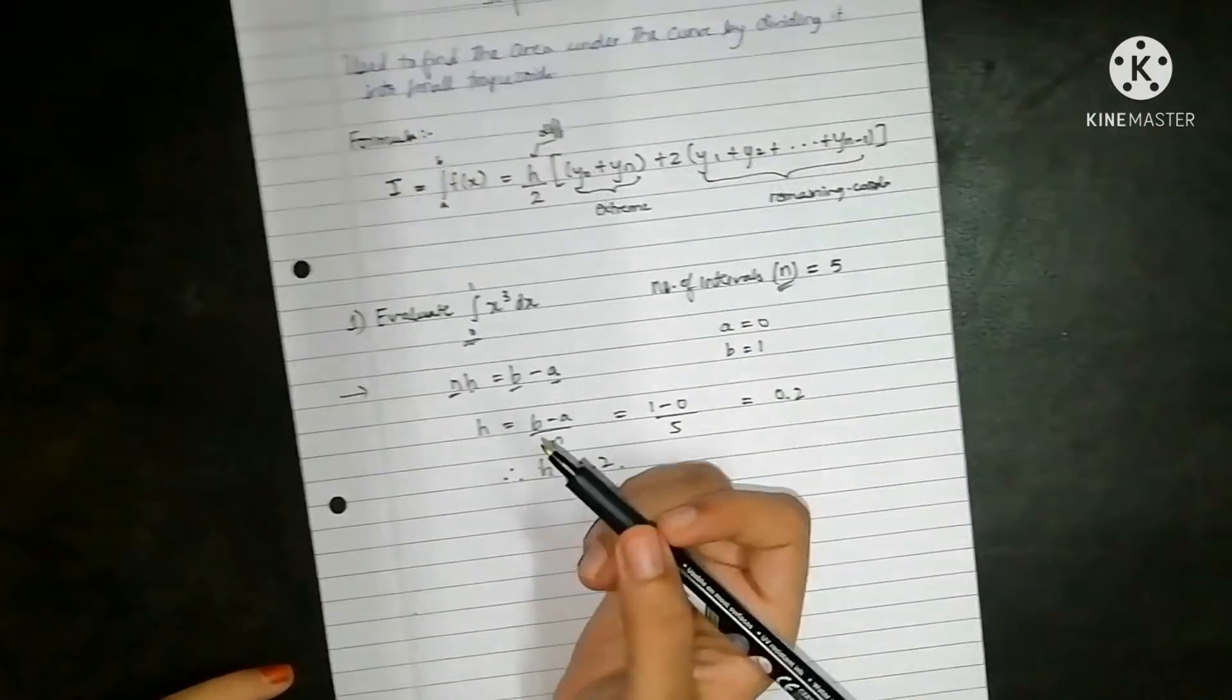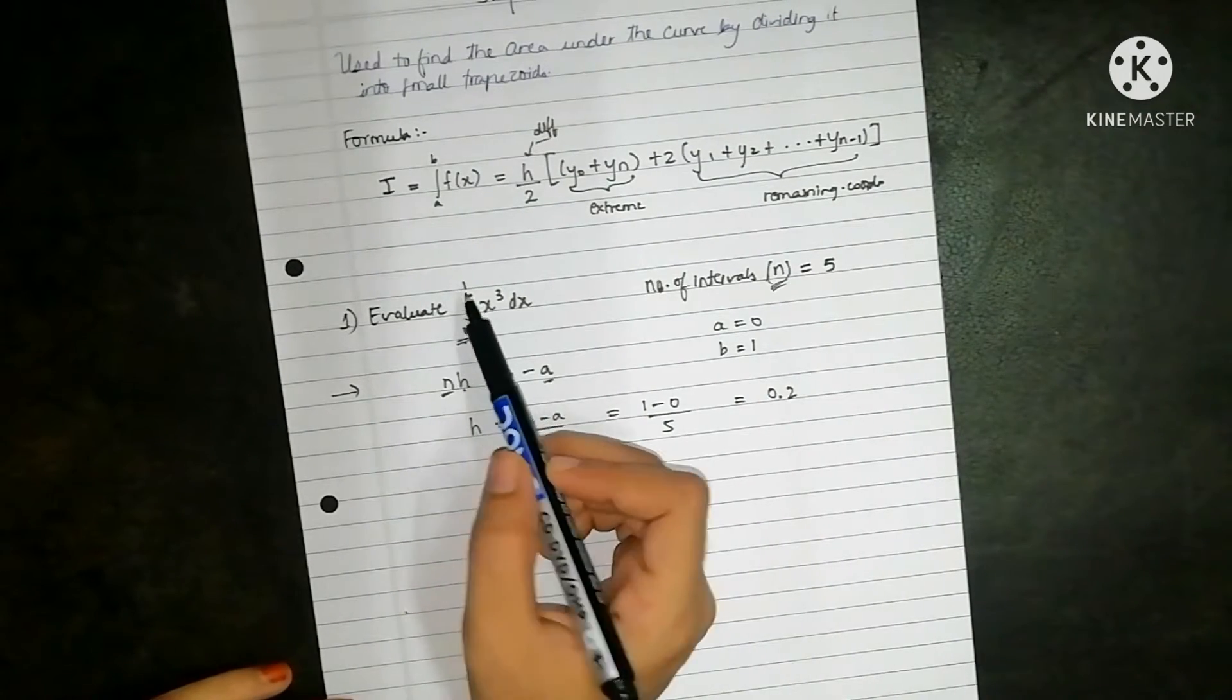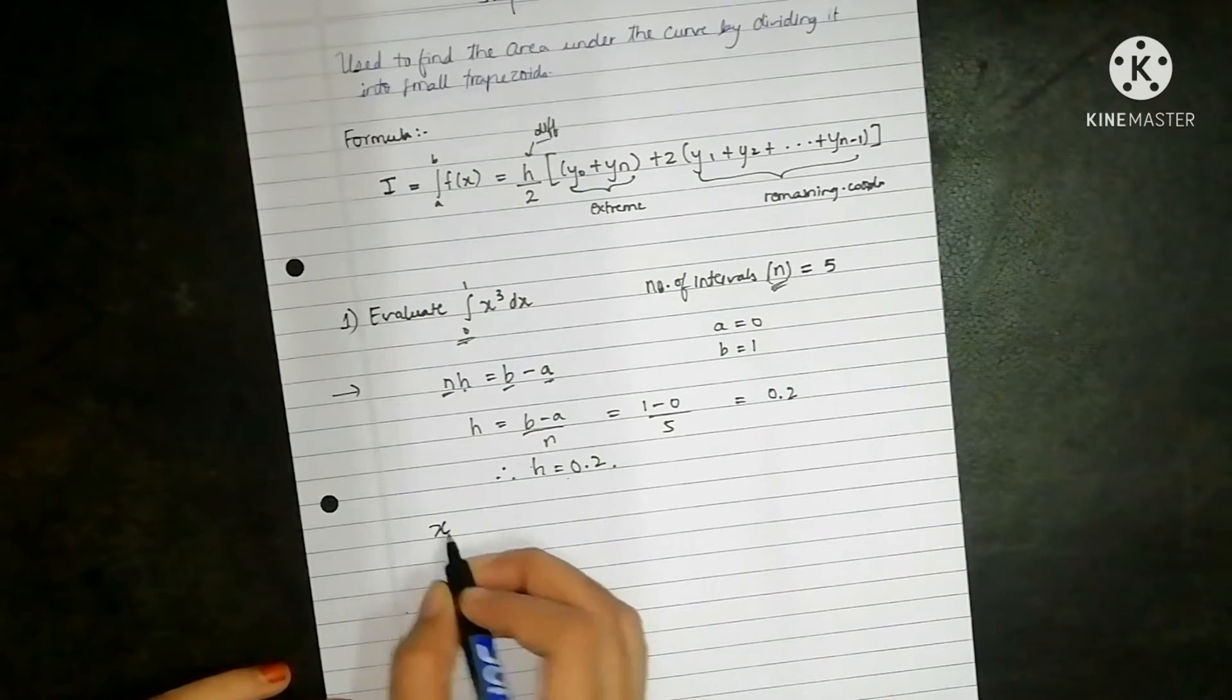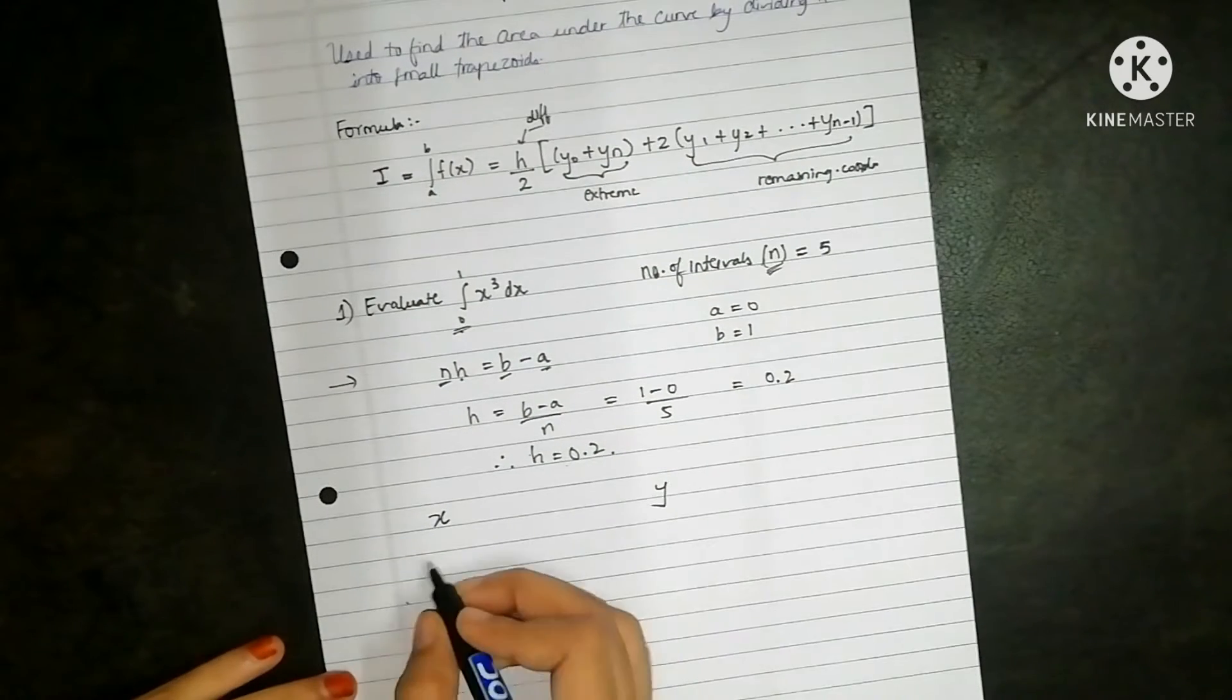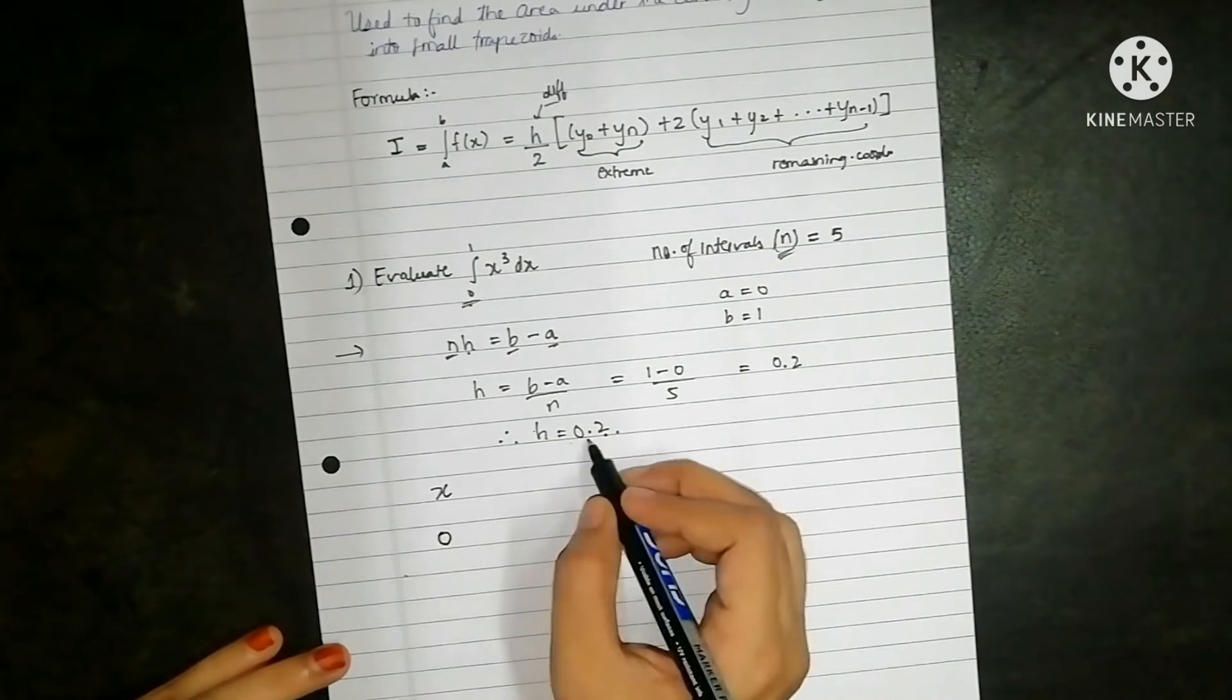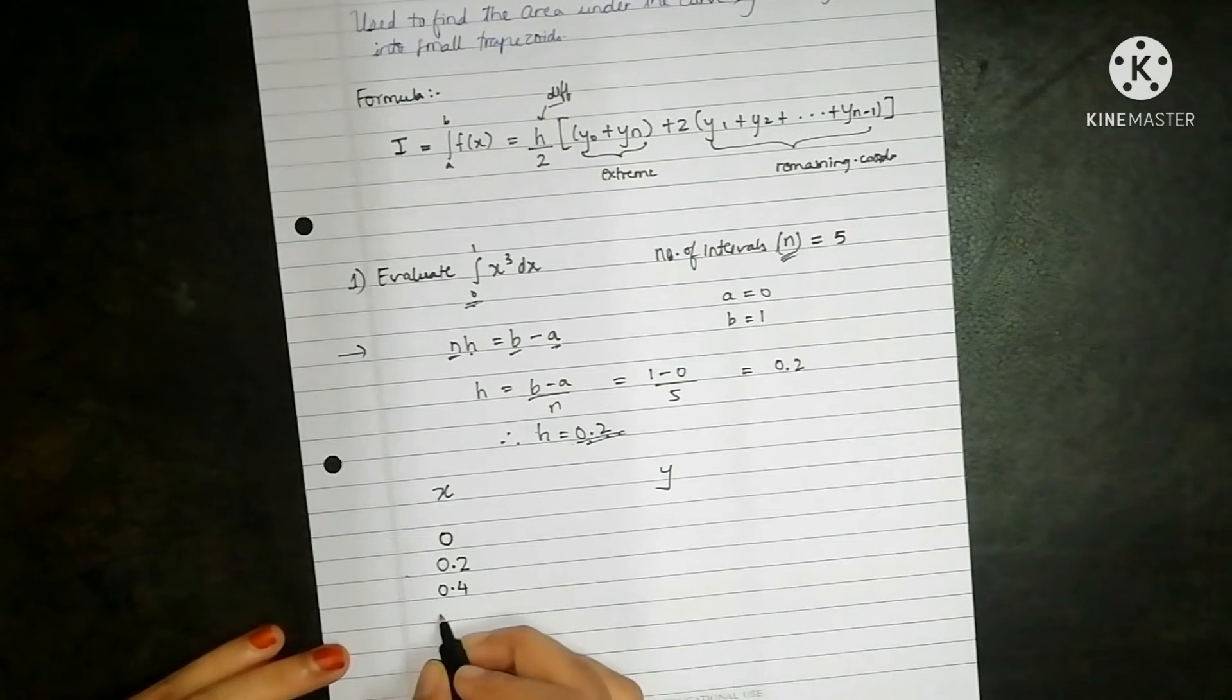From the question itself, we can see that my readings will start from 0 and it will end on 1, and it will have the difference of 0.2. So the values of x and y can be written as starting from 0 and having the interval of 0.2. So 0, then 0.2, then 0.4, then 0.6, 0.8 and 1.